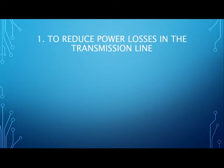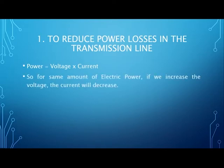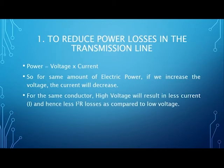We all know the very simple formula that power is equal to voltage multiplied by current. So for the same amount of electric power, if we increase the voltage, the current will automatically decrease. For the same conductor, high voltage will result in less current and hence less I²R losses as compared to low voltages.